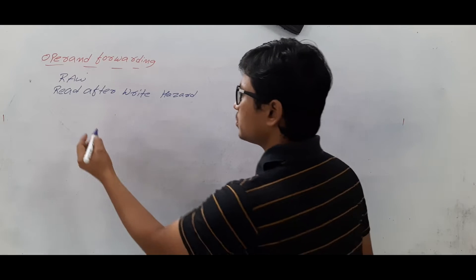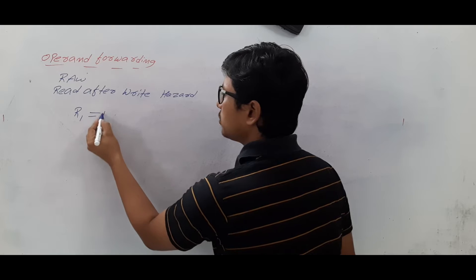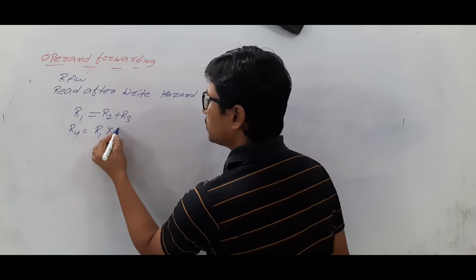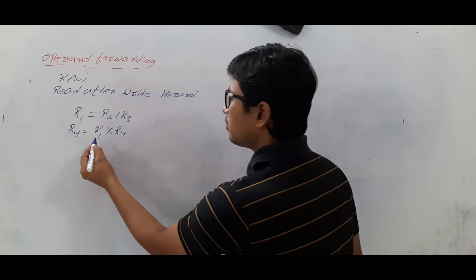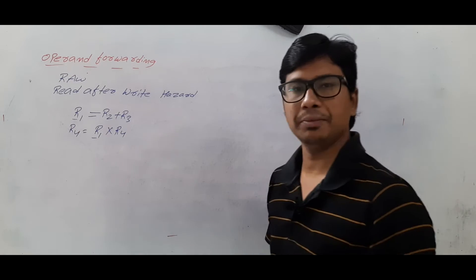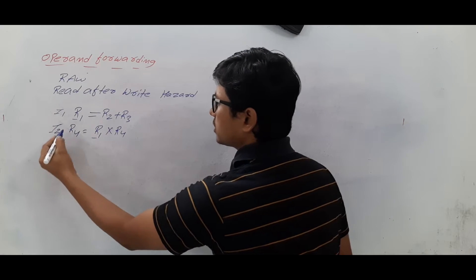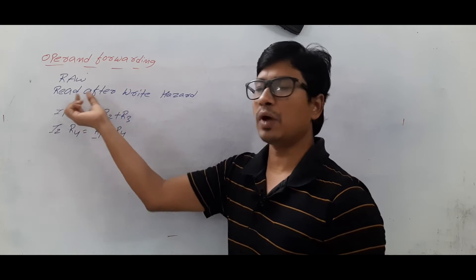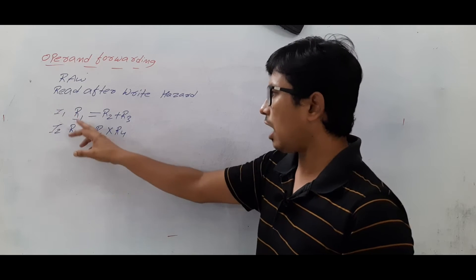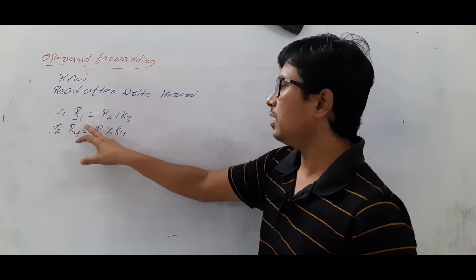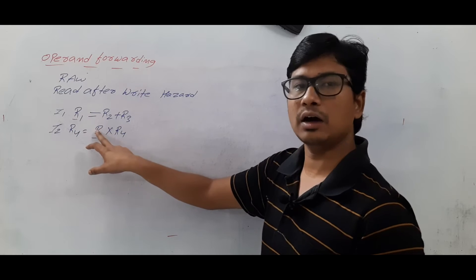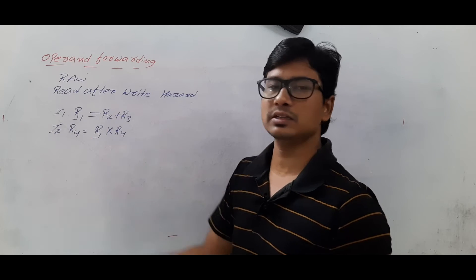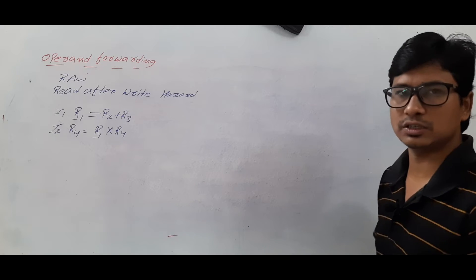Now what is the read after write hazard? Suppose I have instruction 1: r1 = r2 + r3, and then instruction 2: r4 = r1 × r4. So r1 in instruction 2 depends on r1 from instruction 1. First r2 and r3 values will be summed and that result will be stored in the r1 register. After this, if I execute instruction 2, I have to wait for r1. Once I get the r1 value, I will do the multiplication r1 × r4 and store the result in r4.